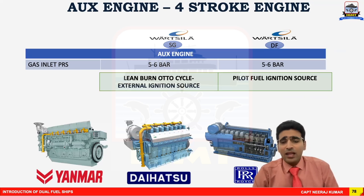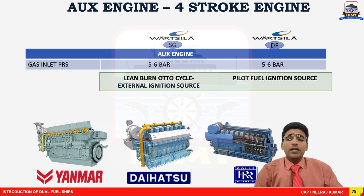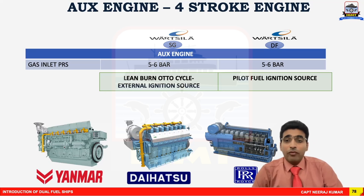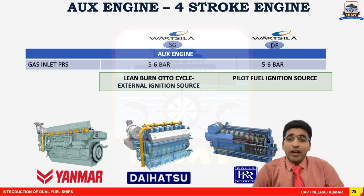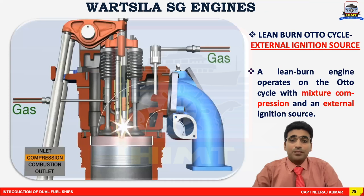For auxiliary engines, there are various manufacturers: Wärtsilä, Yanmar, Daihatsu, Rolls-Royce, Hyundai, and more. Wärtsilä classifies their engines into two types: SG engines, which use an external spark plug ignition working on the lean burn otto cycle, and DF engines, which use a pilot fuel ignition source. Both types operate at 5 to 6 bar gas injection pressure. Most Yanmar, Daihatsu, Rolls-Royce, and Hyundai engines work on the Wärtsilä DF principle, with two injection systems — one pilot fuel and one gas.